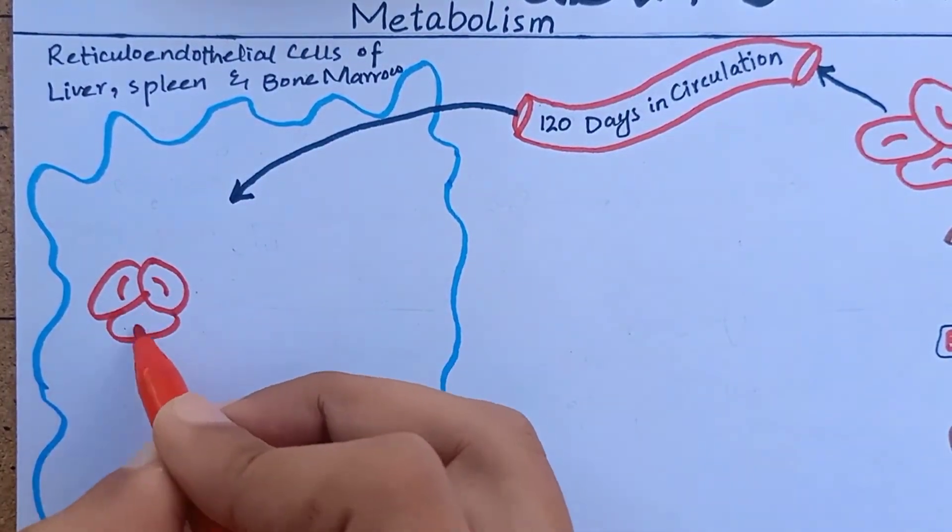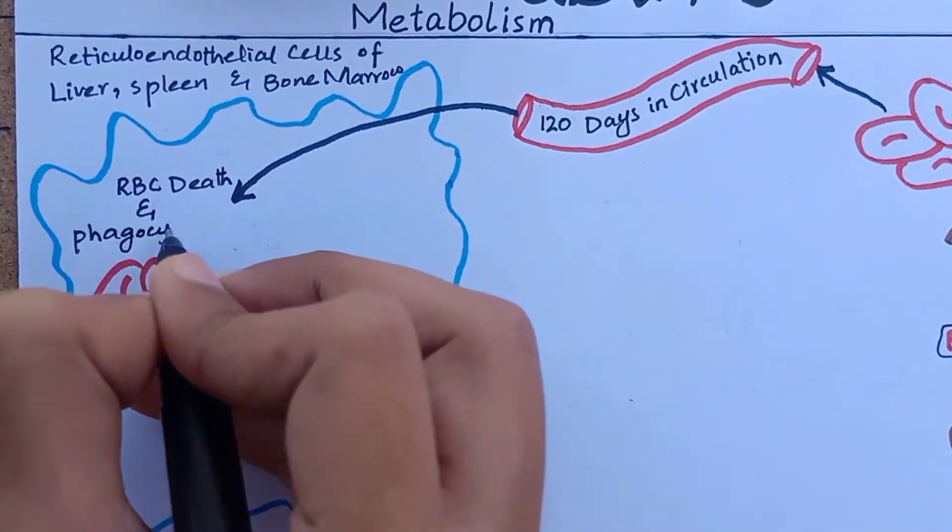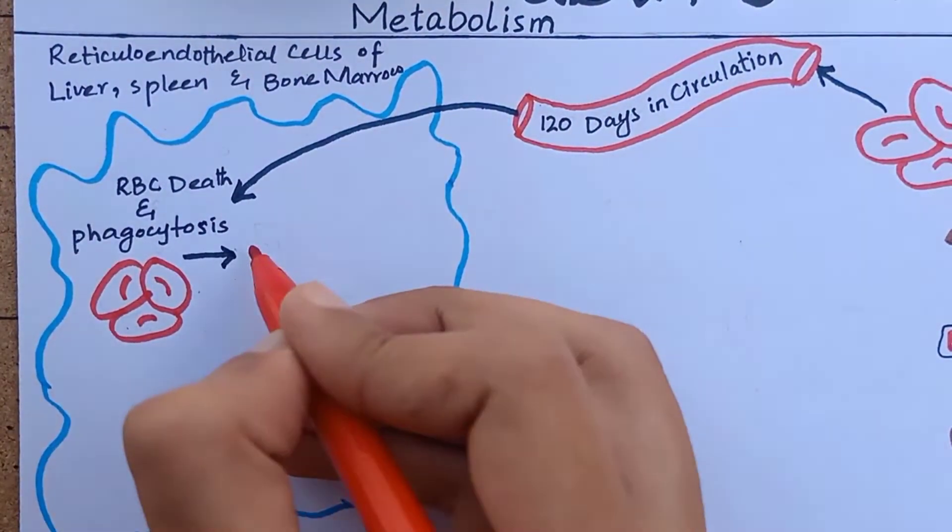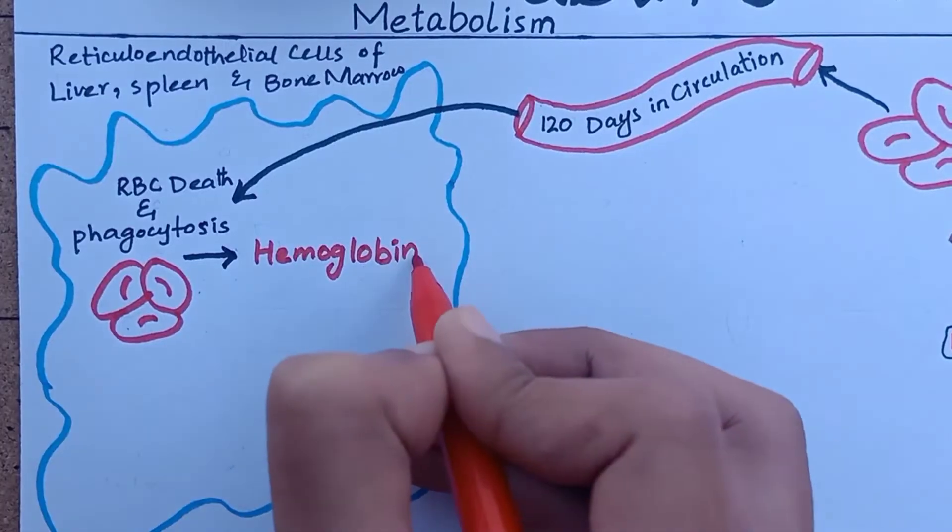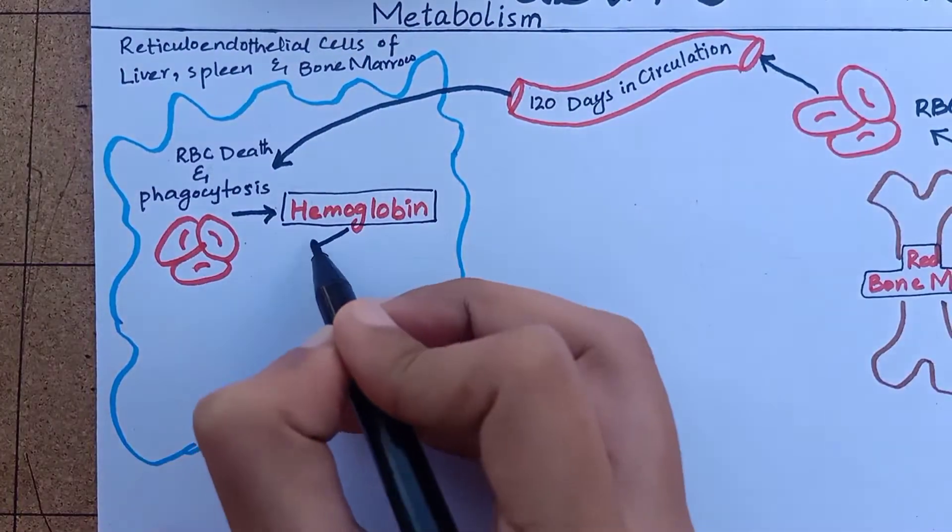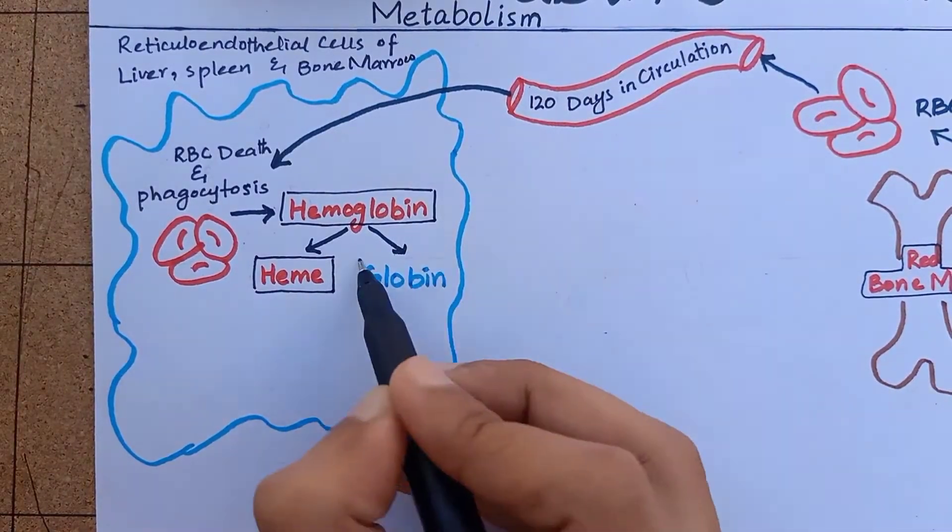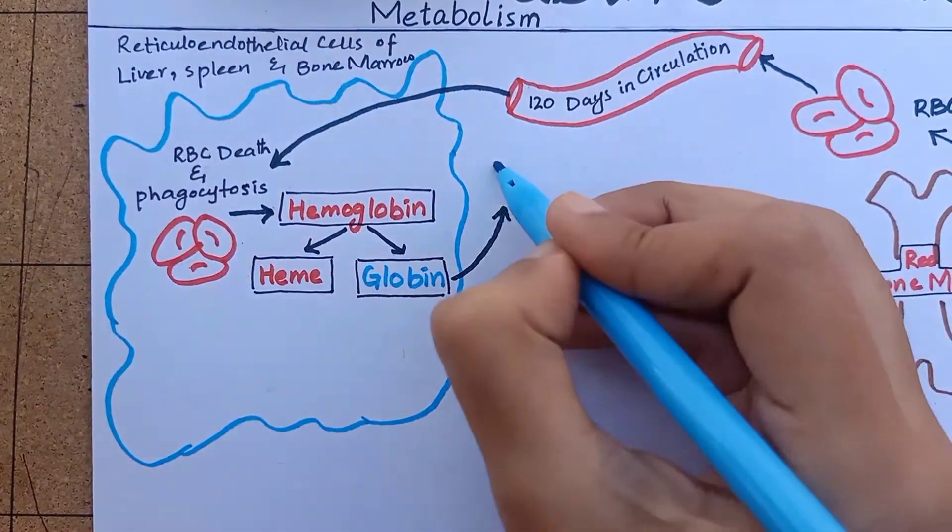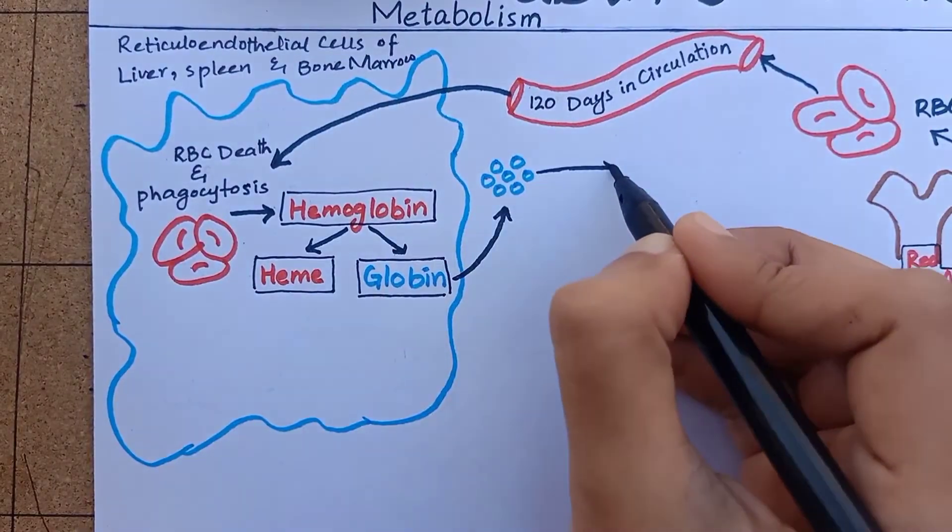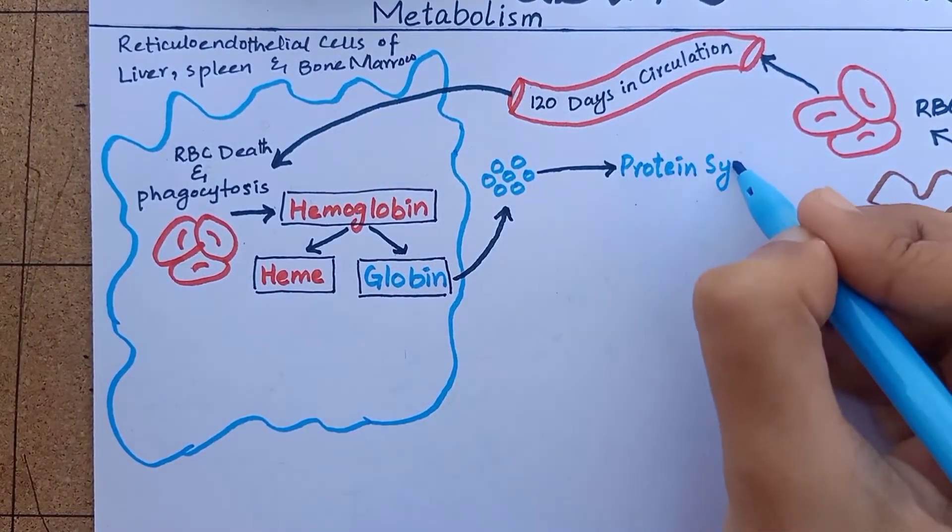Red blood cells are phagocytosed and destroyed and their hemoglobin is released. Hemoglobin is first split into heme and globin. Globin is a protein so it will break down into amino acids that are reused to form new proteins.